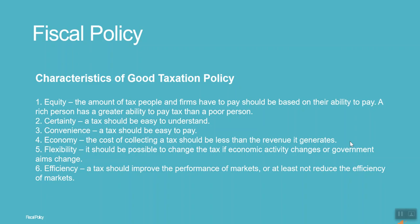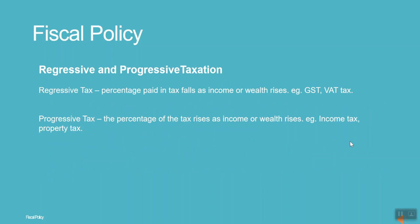A tax should at least not reduce the efficiency of markets. Regressive tax is a tax whereby the percentage paid in tax falls as income or wealth rises. Examples of such taxes are GST and Value Added Tax. Progressive tax is a tax whereby the percentage of tax rises as income or wealth rises.